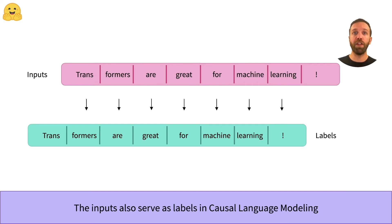In this example, when we feed the token 'Trans' to the model, the next token we want it to predict is 'formers'. In the next step, we feed 'Trans' and 'formers' to the model, and the label we want it to predict is 'are'. This pattern continues, and as you can see, the input sequence is the label sequence just shifted by one.